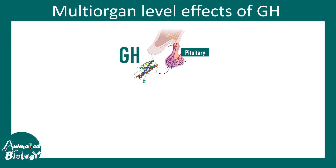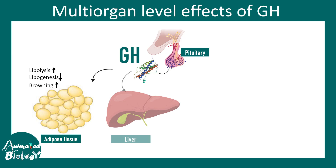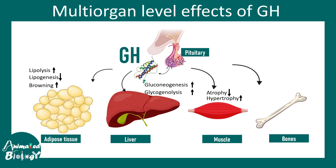Growth hormone has multi-organ effects. It affects adipose tissue by decreasing lipogenesis and increasing lipolysis. It influences the liver to secrete IGF-1, increases gluconeogenesis (making glucose from amino acids and other sources), and promotes glycogenolysis, breaking down existing glycogen reserves. It also has effects on muscle, decreasing the chances of atrophy while increasing the chances of hypertrophy. On bone, it leads to bone growth by promoting osteogenesis and chondrogenesis.